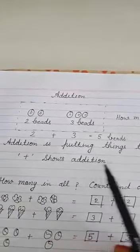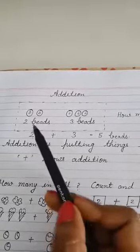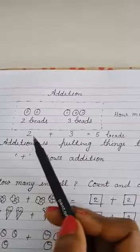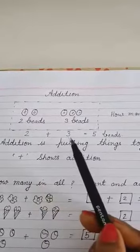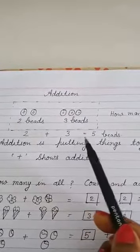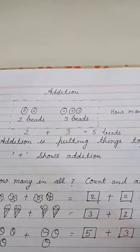This is the sign of addition. Two beads and we put together, it means addition, and three beads. So how many beads? Five beads in all.